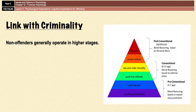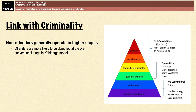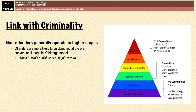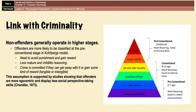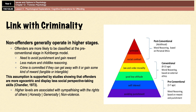Offenders are more likely to be classified at a pre-conventional level of Kohlberg's model — that is stages one and two — whereas non-criminals have generally progressed to the conventional level and beyond. The pre-conventional level is generally characterized by a need to avoid punishment and gain reward, and it's associated with a less mature, childlike reasoning. In terms of criminality, it means that adults and adolescents who reason at the pre-conventional level may commit a crime if they feel they can get away with it or gain rewards such as money or increased respect. This is supported by studies that have often found offenders are more egocentric and display poorer social perspective-taking skills than non-offenders.